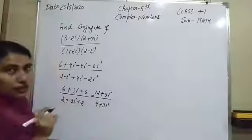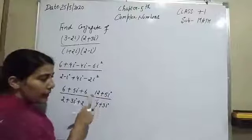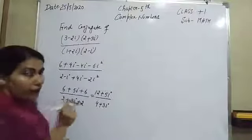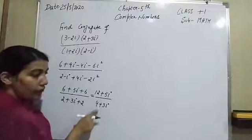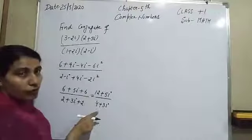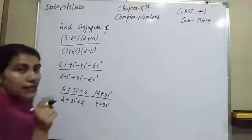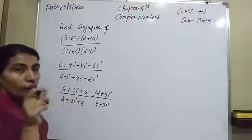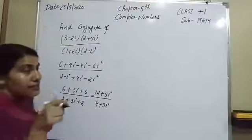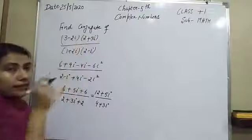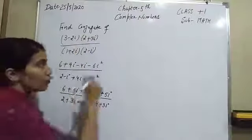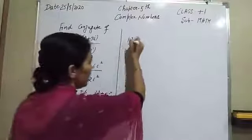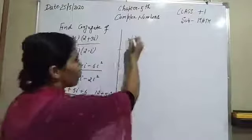So we have (12 plus 5 eta) divided by (4 plus 3 eta). Now again this is not in the form of a complex number, so if we have it in fractional form, we have to do its rationalizing to convert it into the form of a complex number, and after that we can find its conjugate.